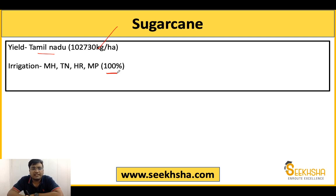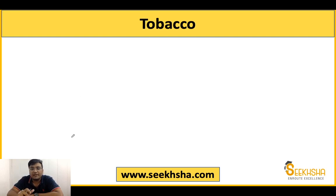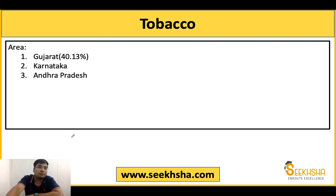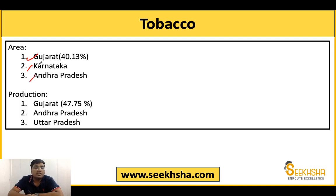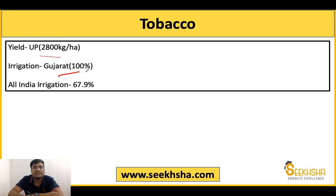For sugarcane irrigation, four states have 100% developed irrigation: Maharashtra, Tamil Nadu, Haryana, and MP. At the All India level, irrigation potential for sugarcane is very high at 96.6%. Finally for tobacco: the area is highest in Gujarat at 40.13%, followed by Karnataka and Andhra Pradesh. Production is also highest in Gujarat, but 2nd is Andhra Pradesh and 3rd is Uttar Pradesh — Karnataka does not appear in the top 3 for production. Gujarat produces 47.75% of India's tobacco. For yield, UP has the best at 800 kg per hectare, and Gujarat has 100% irrigation for tobacco.